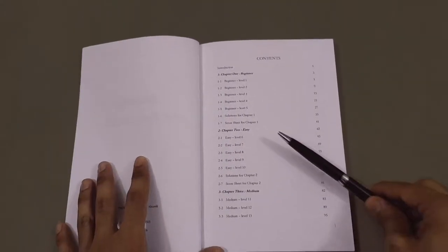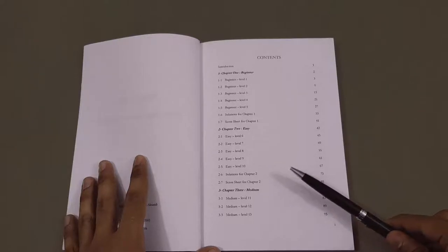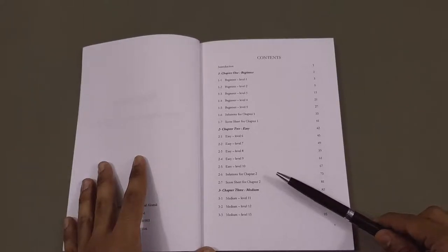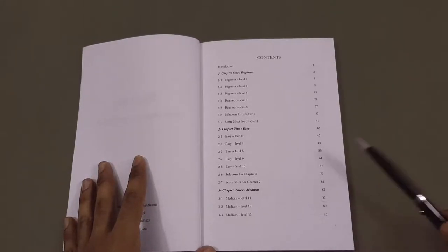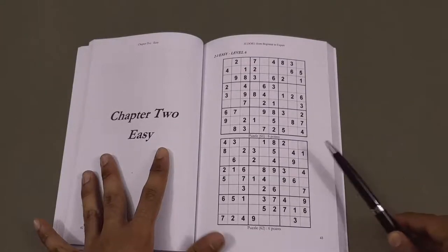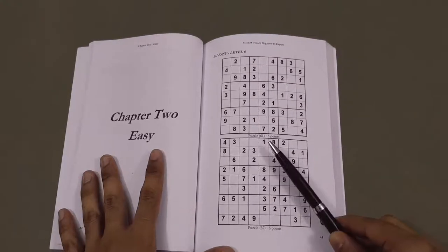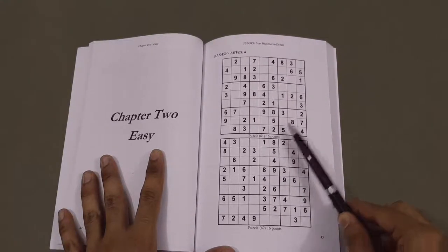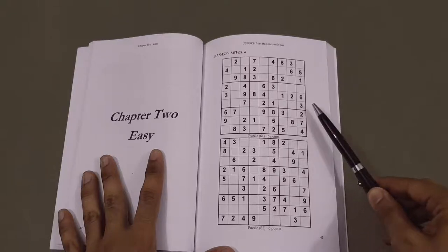Each single chapter has five levels as well as a solutions section and a score sheet. So let's take chapter two for example. This is chapter two. You can see two puzzles and the points assigned for this particular puzzle.